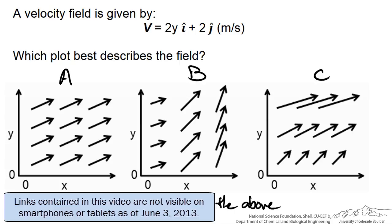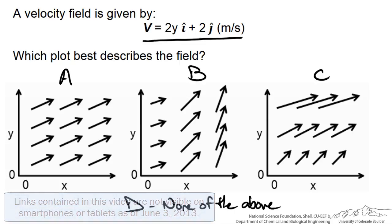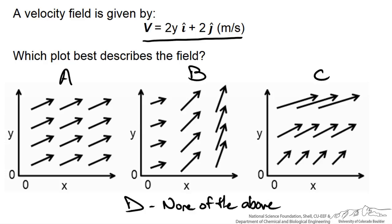Here we are looking at velocity fields. We are given a velocity vector that says we have 2 times y for our x component of velocity, plus 2 for our y component of velocity. There is no z component of velocity, and we see that it is not a function of time, so these snapshots would be consistent with time. So which of these velocity fields best describes this vector that is given?